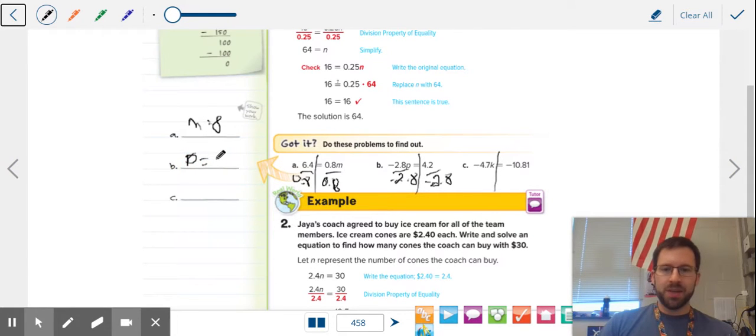Remember, one negative in the problem in multiplication or division will always result in a negative answer. If there were two, they cancel out. It's a double negative. The opposite of a negative is a positive.